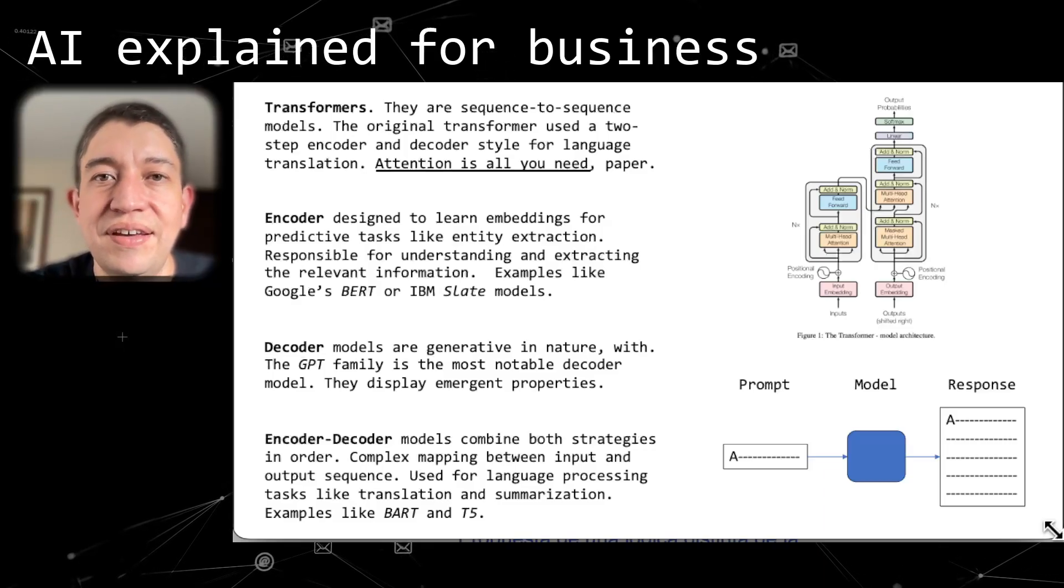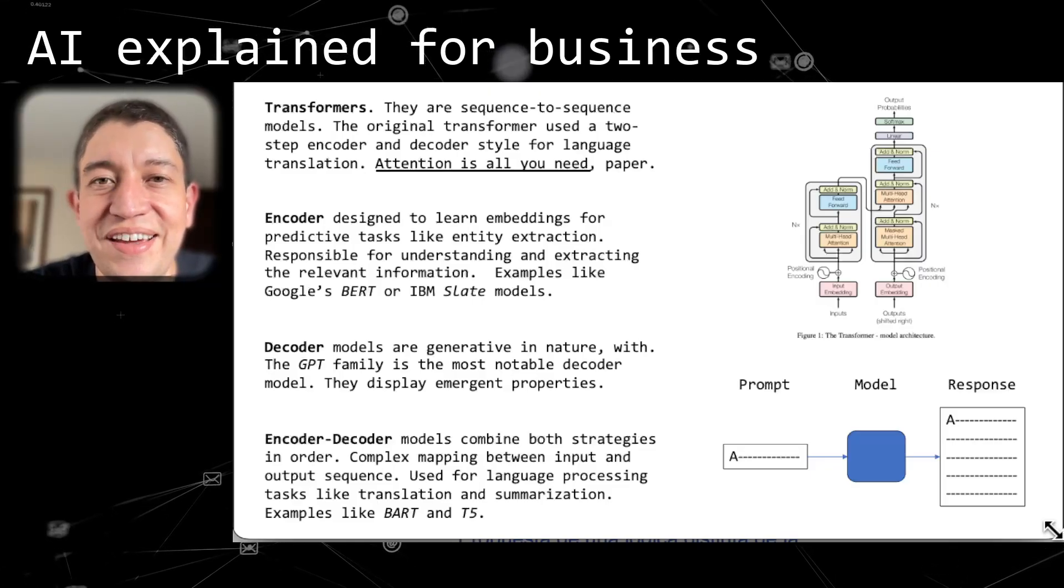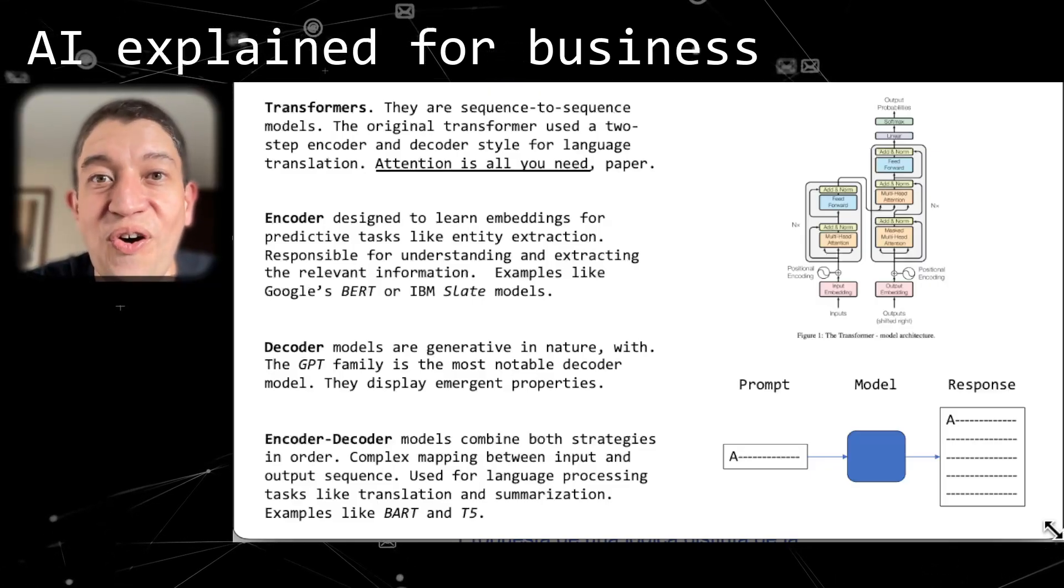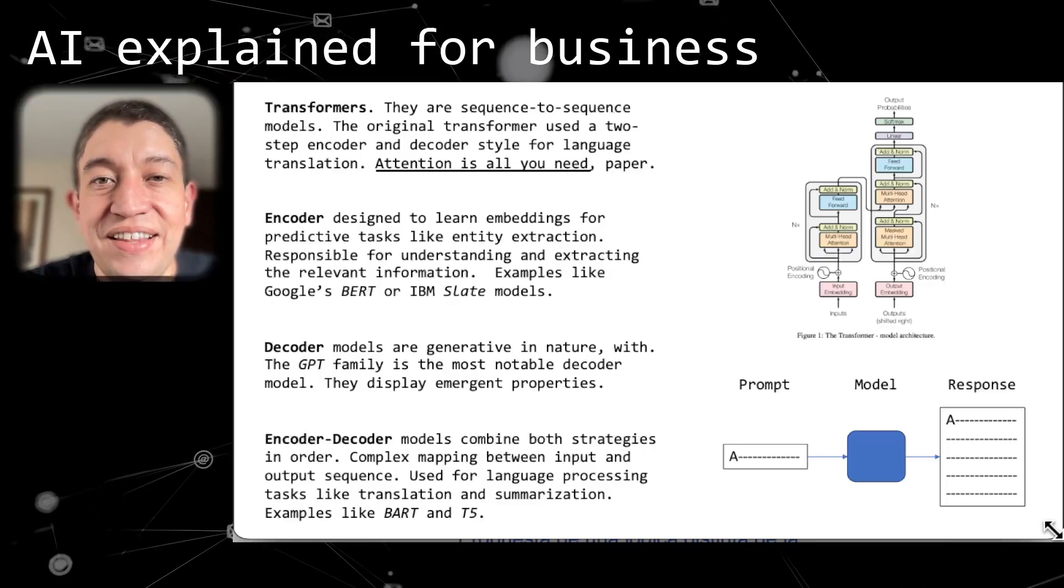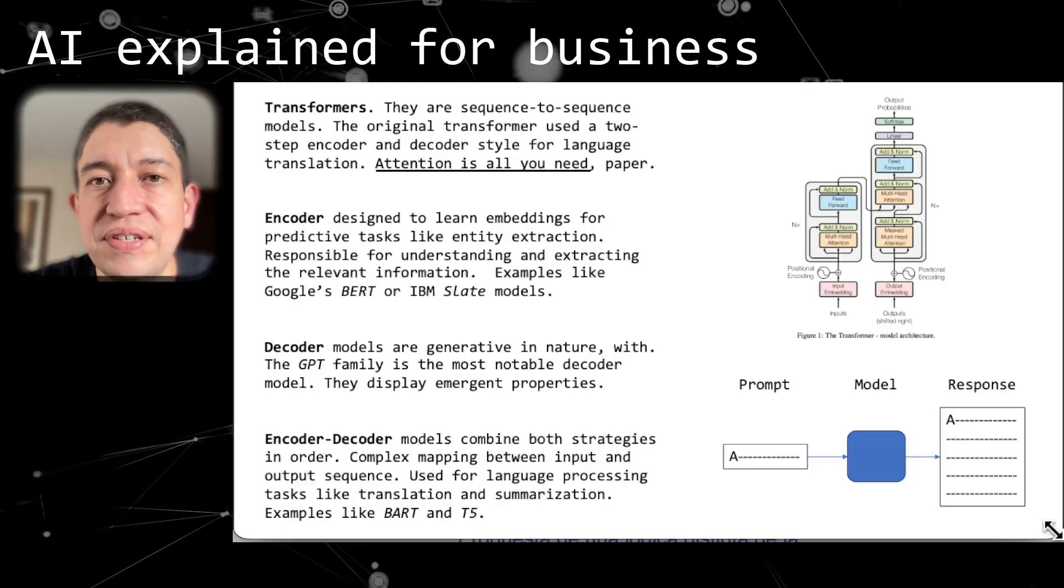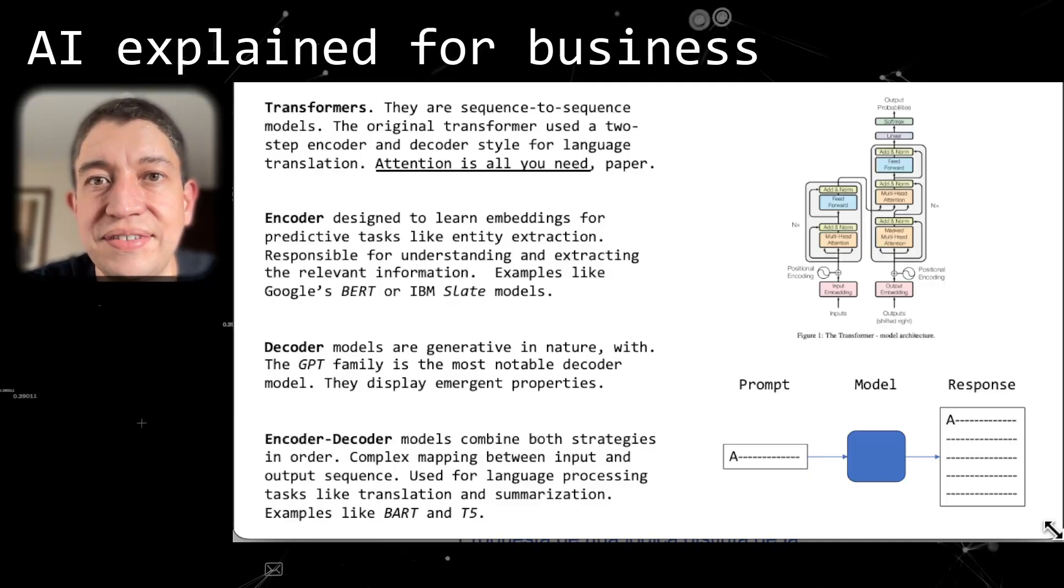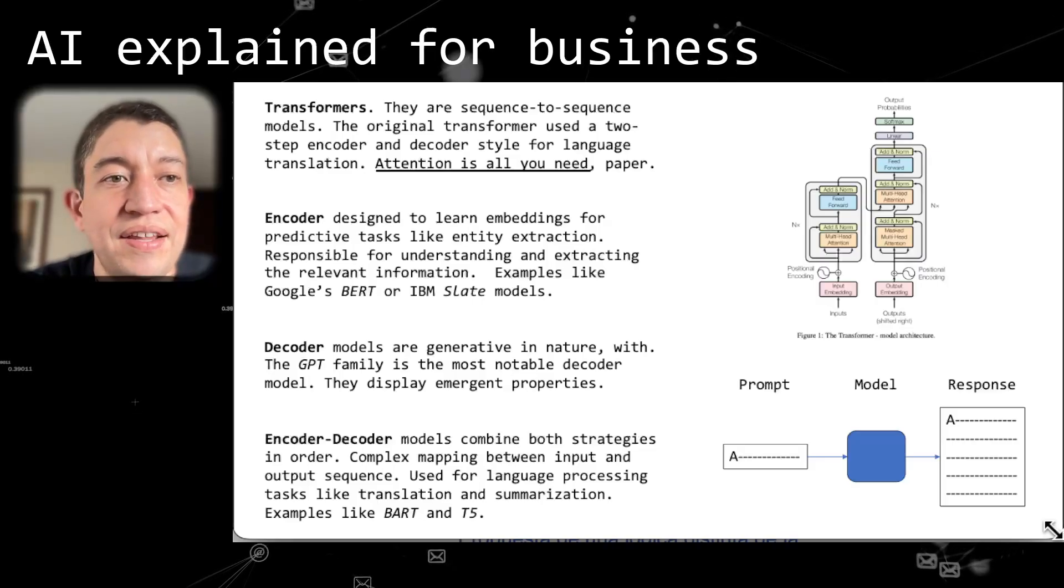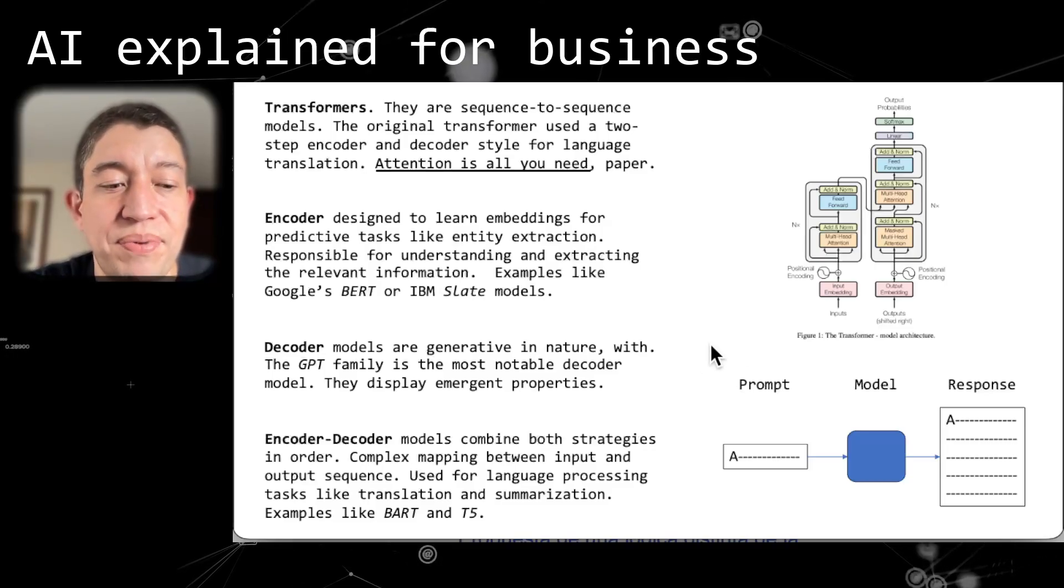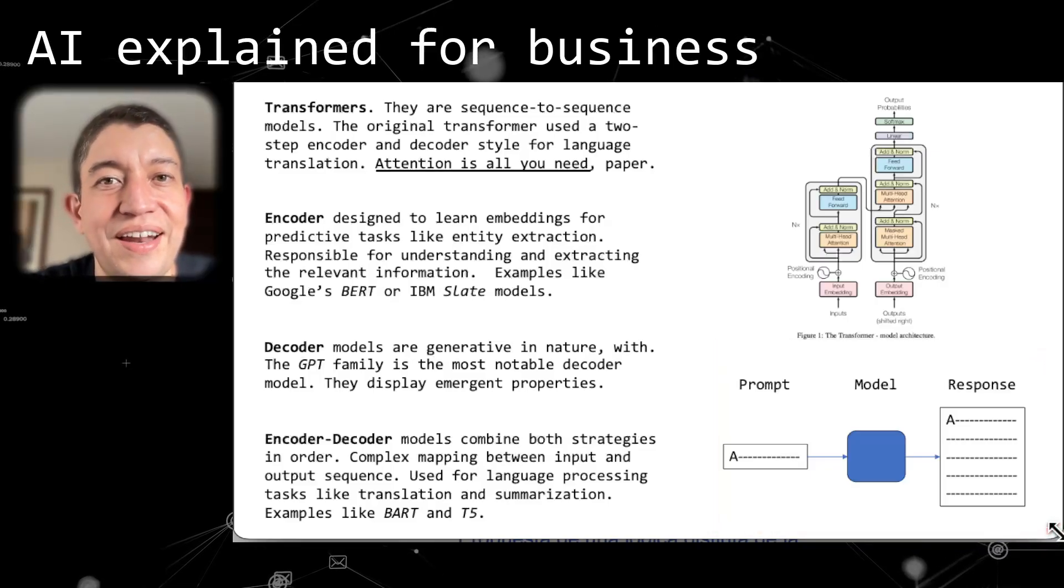You give it a small prompt and that small prompt gets processed by the model to generate a long response. It could be something like, tell me about the Civil War. If you ask ChatGPT, it'll give you a long response around it. There are scenarios which are generative in nature, and these types of models have displayed emerging properties as they increase in size. So it's definitely a space we're looking at quite a bit.